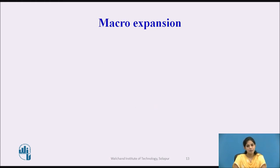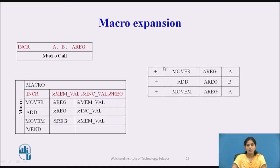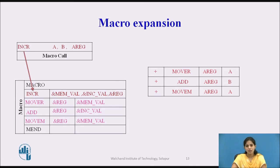Now we see the expansion example. The macro call is INCR, with MEMVAL = A, INCVAL = B, and REGISTER = AREG. For the first model statement MUR &REGISTER, &MEMVAL: we place a plus symbol in the label field to differentiate it from the original statement, then specify the opcode MUR as-is, substitute &REGISTER with AREG and &MEMVAL with A.